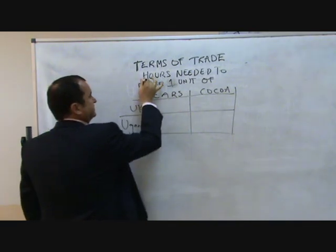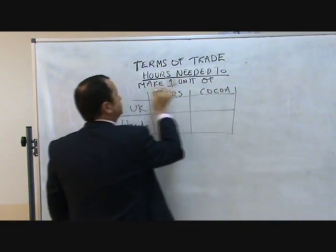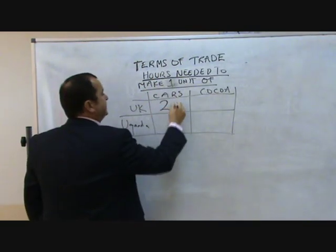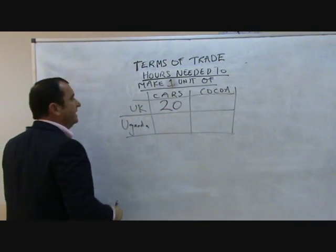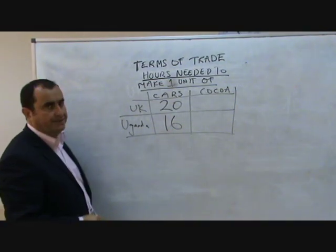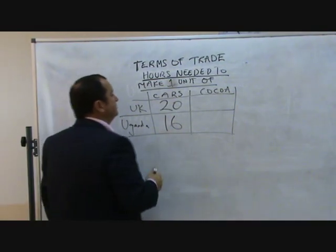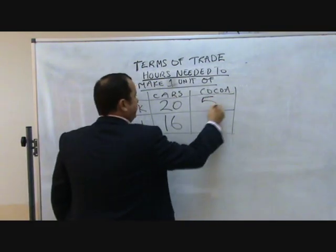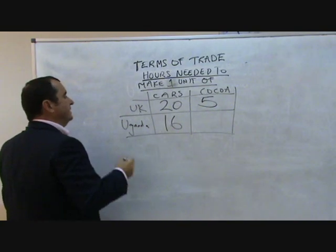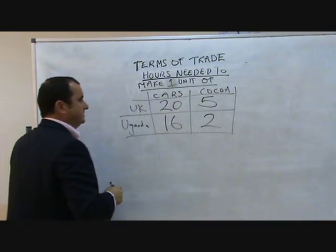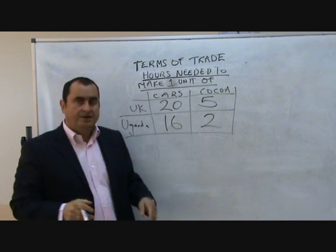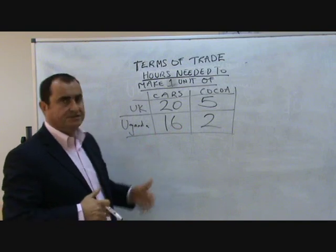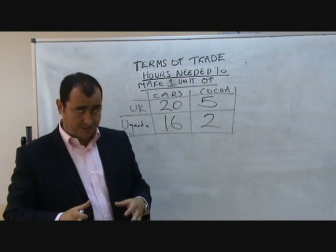Incidentally, Uganda is the biggest producer of cocoa beans in the world, so there's a little bit of truth there. This chart tells us the hours needed to make one unit of cars and cocoa. In the UK it takes 20 hours to make a car, and in Uganda it only takes 16 hours. In the UK a unit of cocoa beans takes five hours to grow, and in Uganda it only takes two hours.